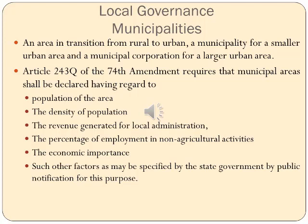Article 243Q of the 74th Amendment requires that the municipal area shall be declared having regard to the population of the area, density of the population, revenue generated for local administration, percentage of employment in non-agricultural activities, and economic importance as specified by the state government. Among urban local governments, municipal corporations enjoy a greater degree of fiscal autonomy, with specific fiscal and functional powers varying across states. These local governments have larger populations, more diversified economic bases, and deal with state governments directly. Municipalities, on the other hand, have less autonomy, smaller jurisdiction, and deal with state governments through the Directorate of Municipalities.